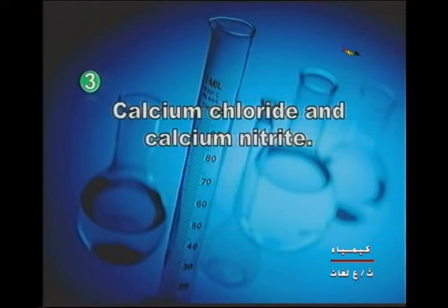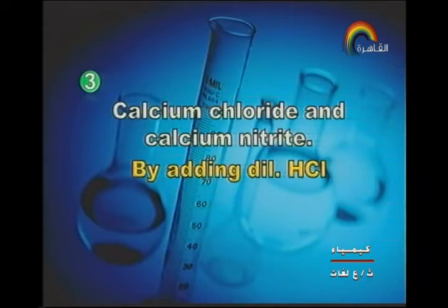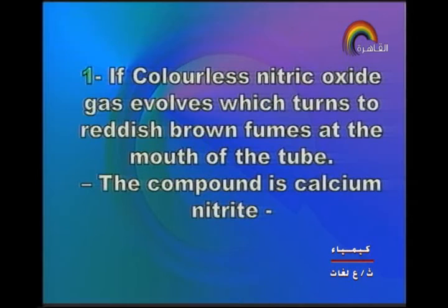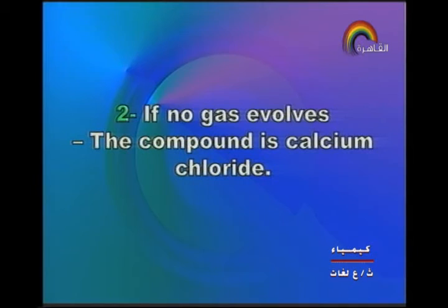Next point: calcium chloride and calcium nitrite — by adding dilute hydrochloric acid to both. If colorless nitric oxide gas evolves which turns to reddish brown fumes at the mouth of the tube, the compound is calcium nitrite. If no gas evolves, the compound is calcium chloride.